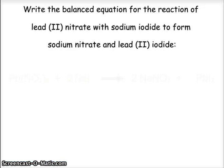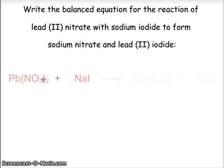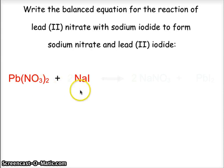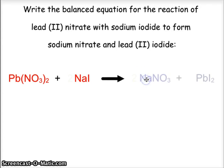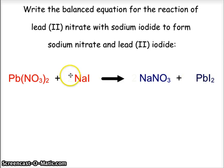As we do with everything in stoichiometry, we need to start with a balanced chemical equation. We are going to look at the reaction of lead nitrate with sodium iodide. Lead is plus 2, nitrate is minus 1, so that becomes Pb(NO3)2. We're going to combine that with sodium iodide, NaI, to yield sodium nitrate, NaNO3, and lead iodide, PbI2.